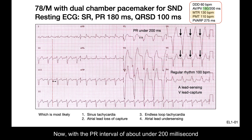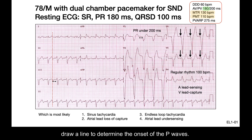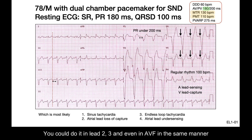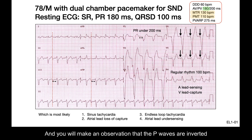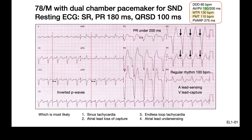With a PR interval of under 200 milliseconds, you could look at the inferior leads and draw a line to determine the onset of the P waves — in lead II, III, and even AVF — and you will observe that the P waves are inverted.